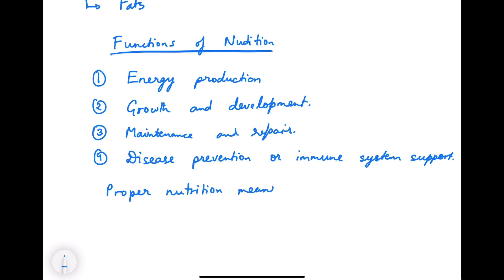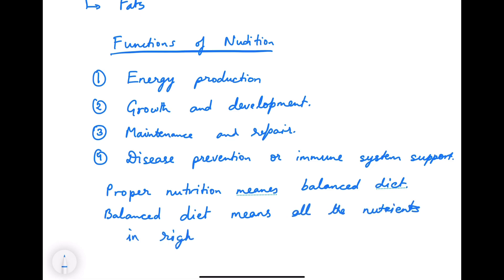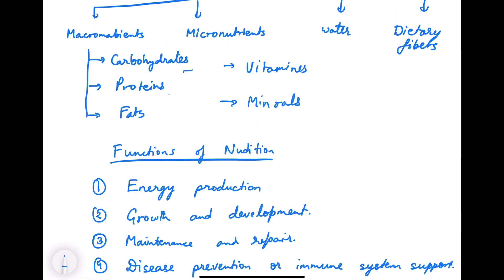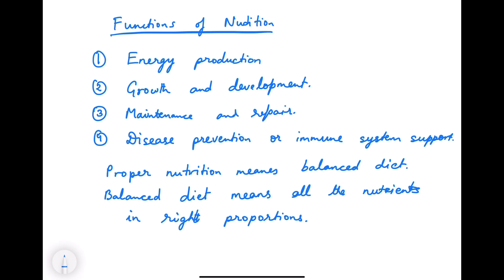So what is proper nutrition? Proper nutrition means a balanced diet, and a balanced diet means all the nutrients in the right proportions. All the nutrients we discussed — carbohydrates, proteins, fats, vitamins, minerals, water, and dietary fibers — should be in the proportions required by the body to maintain it properly. That is called a balanced diet, and a balanced diet is required for proper nutrition.